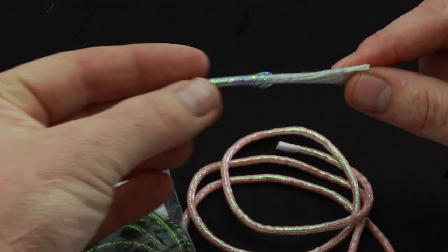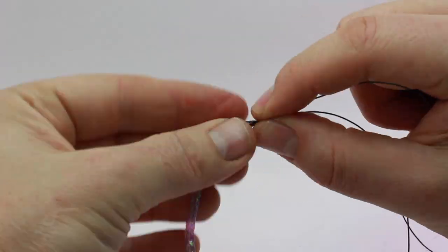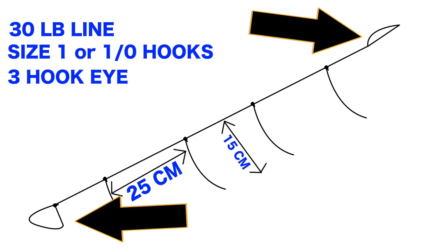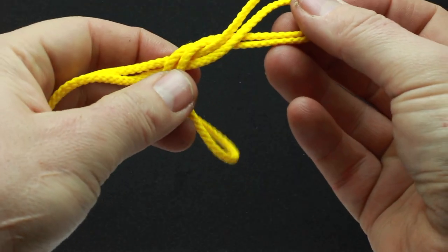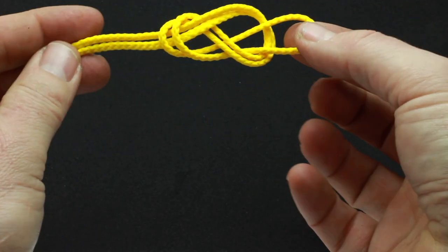In the last video we learned how to tie the actual feathers themselves using those Mylar shiny tube type things. So this video is just how to assemble the rig itself. Take about a meter of main line.